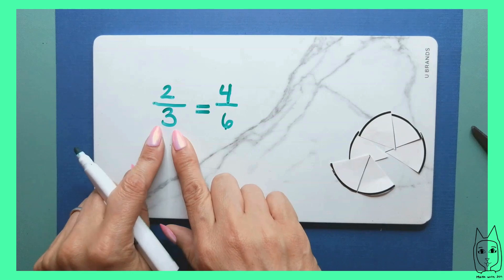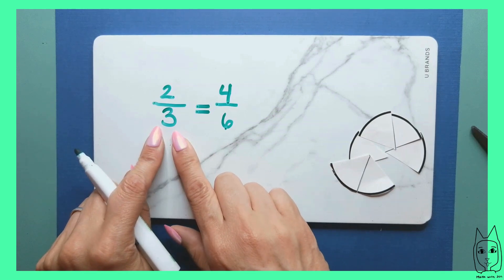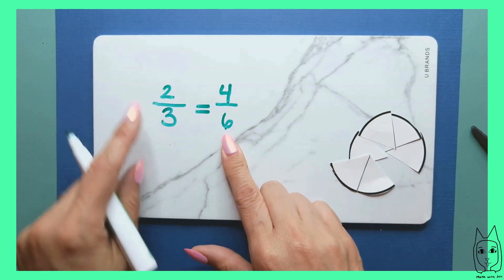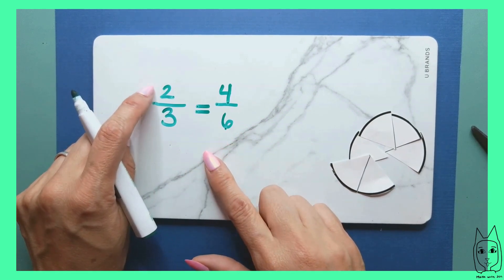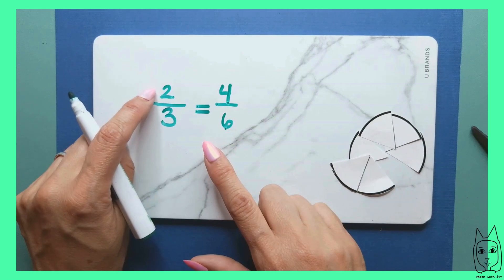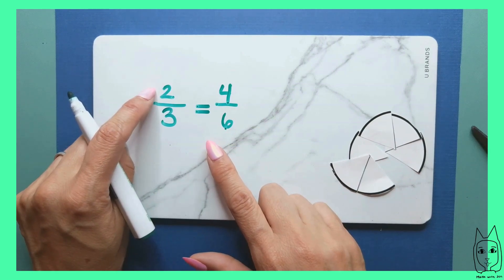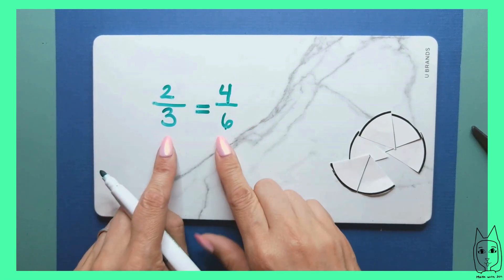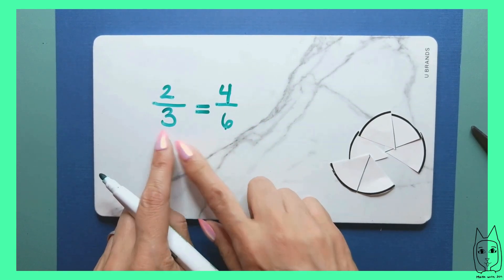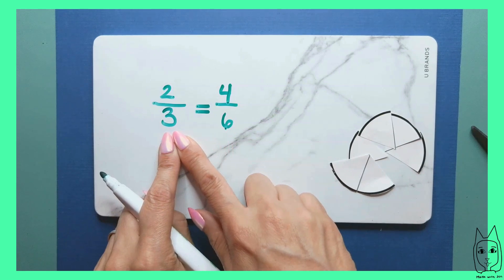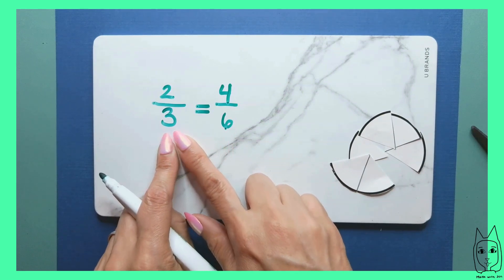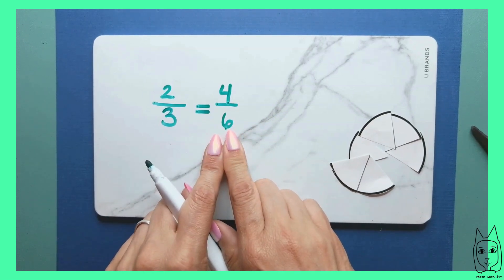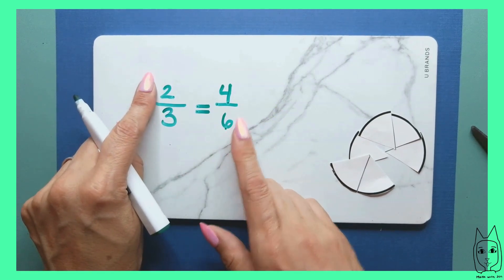I took each of these parts and broke them up into two. So three times two is six. Each of these parts I was talking about were also broken up into two equal parts. Two times two is four. So these are equivalent fractions because each of these equal parts needed to make a whole — I divided them in half into two equal parts, which created six parts, and those two parts became four.